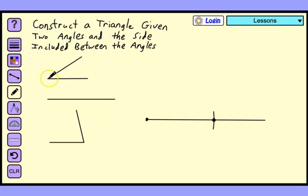Now we are going to make a copy of the first angle so that its vertex is at the endpoint of our line segment. Start by drawing an arc through both sides of the first angle.